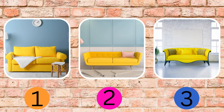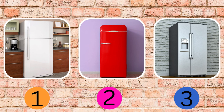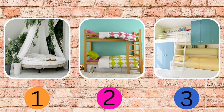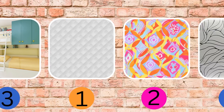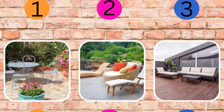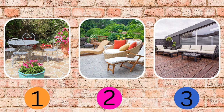Three yellow sofas, but they're all a bit different — which one would you pick? Time to design the kitchen — which fridge would you choose? Three very different beds — which one's your favourite? How about wallpaper? Which one would you pick? Design even includes the garden — what would your perfect garden look like?